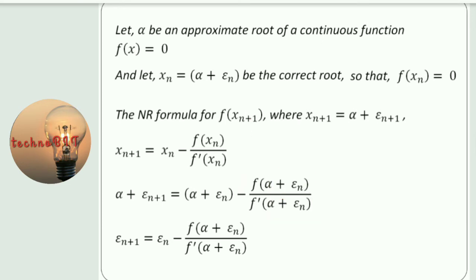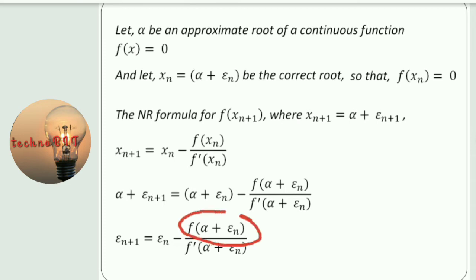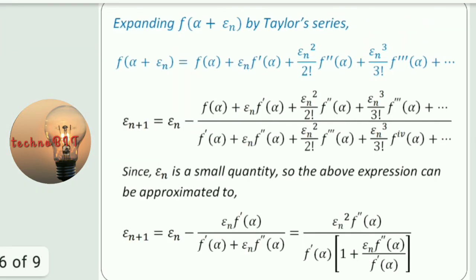You can see the alpha term is common on both sides, so we can cancel it out and we are getting a simplified equation. Now I have a function in terms of alpha and epsilon_n — there are two terms. In the next step we have to do the expansion of these two terms: f(alpha + epsilon_n) and f'(alpha + epsilon_n). For this expansion we use the Taylor series.